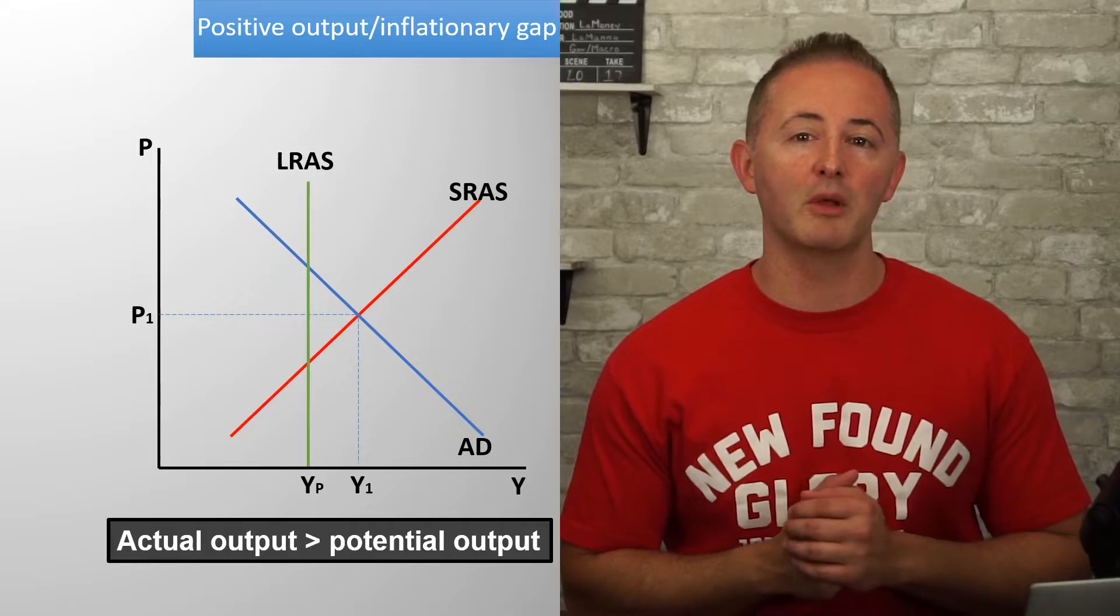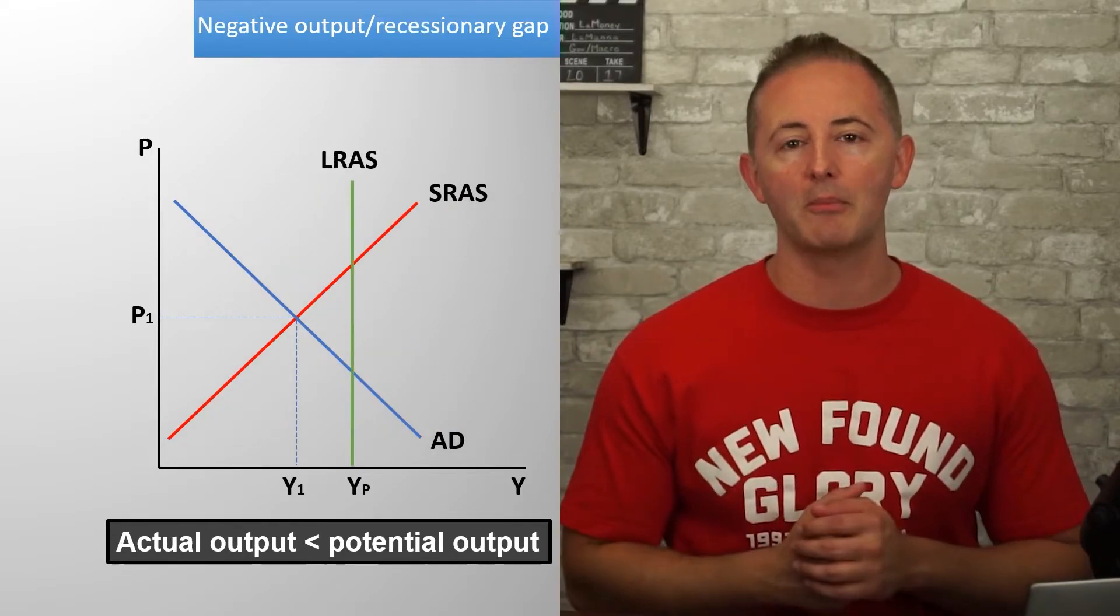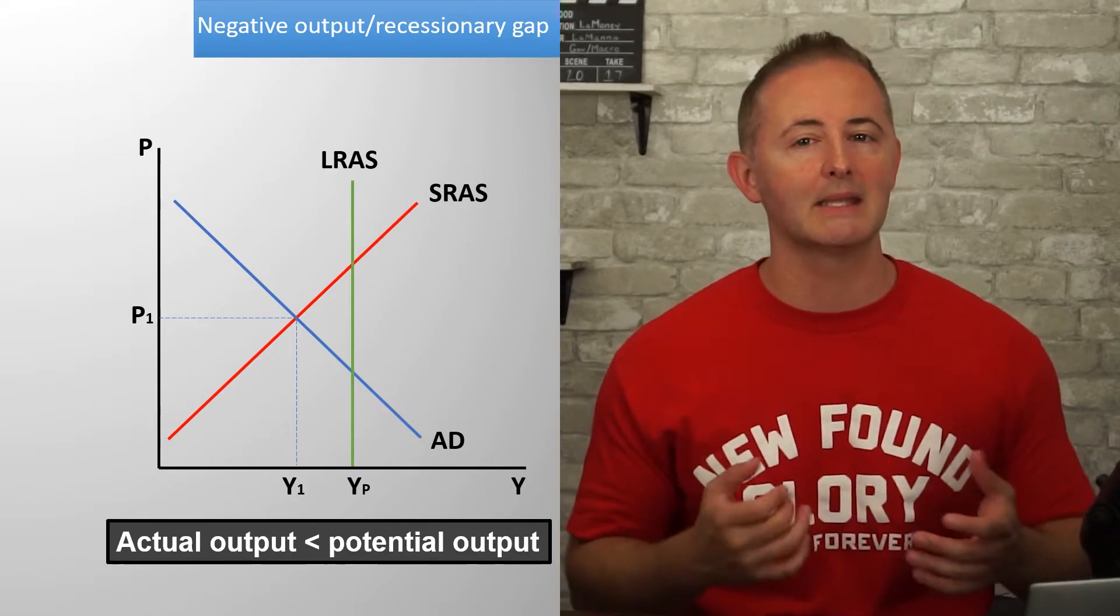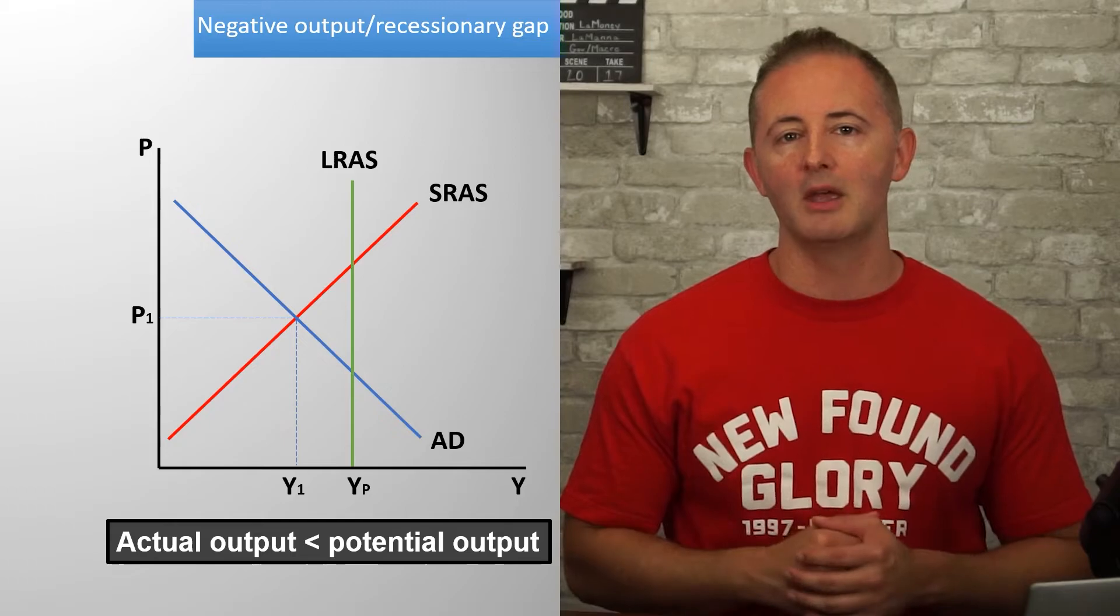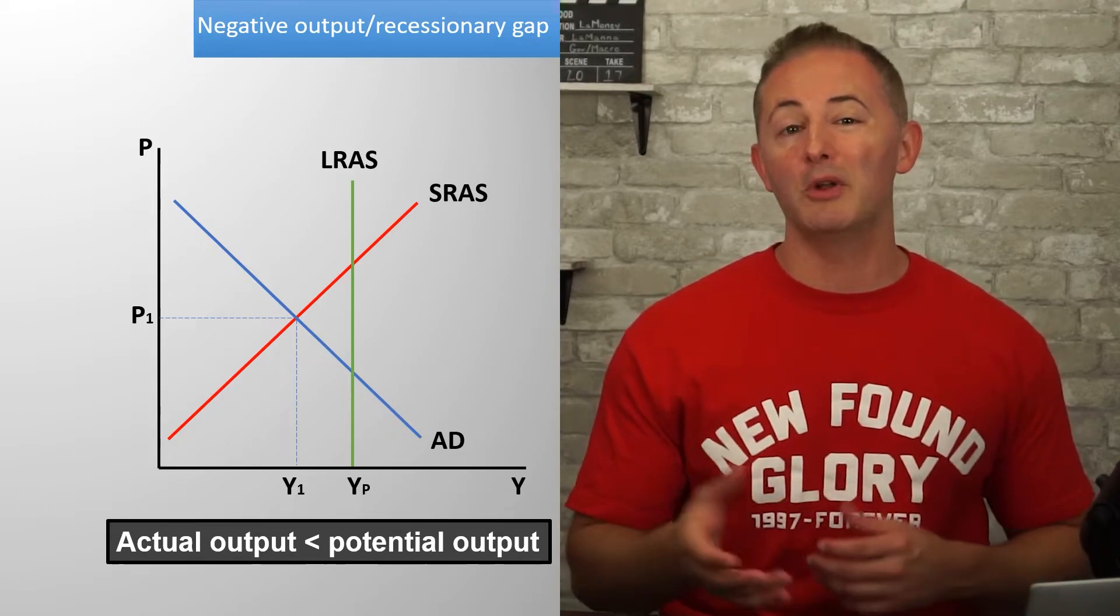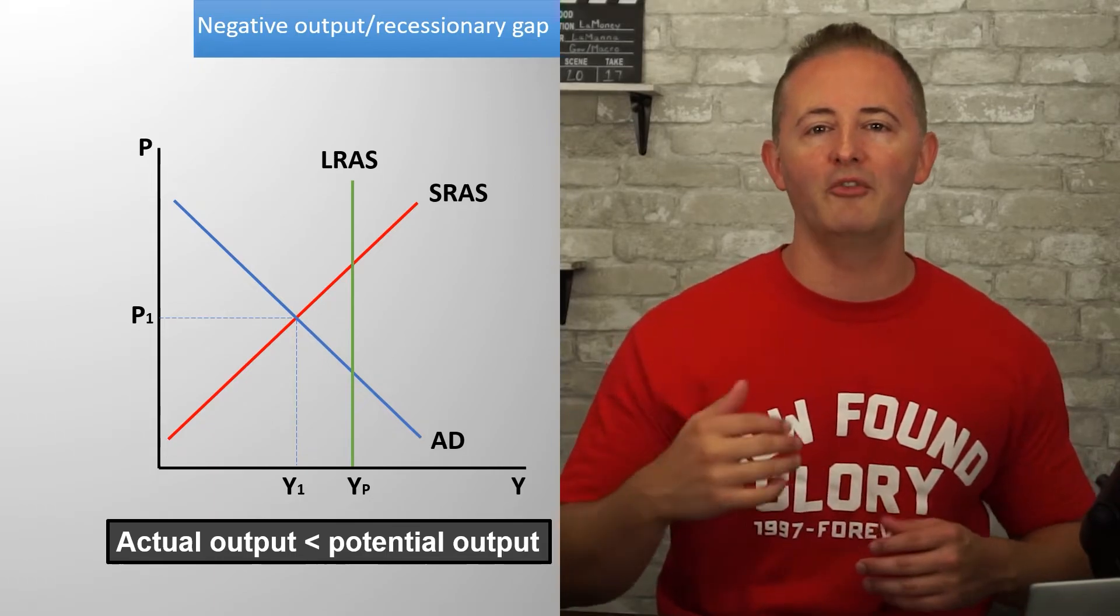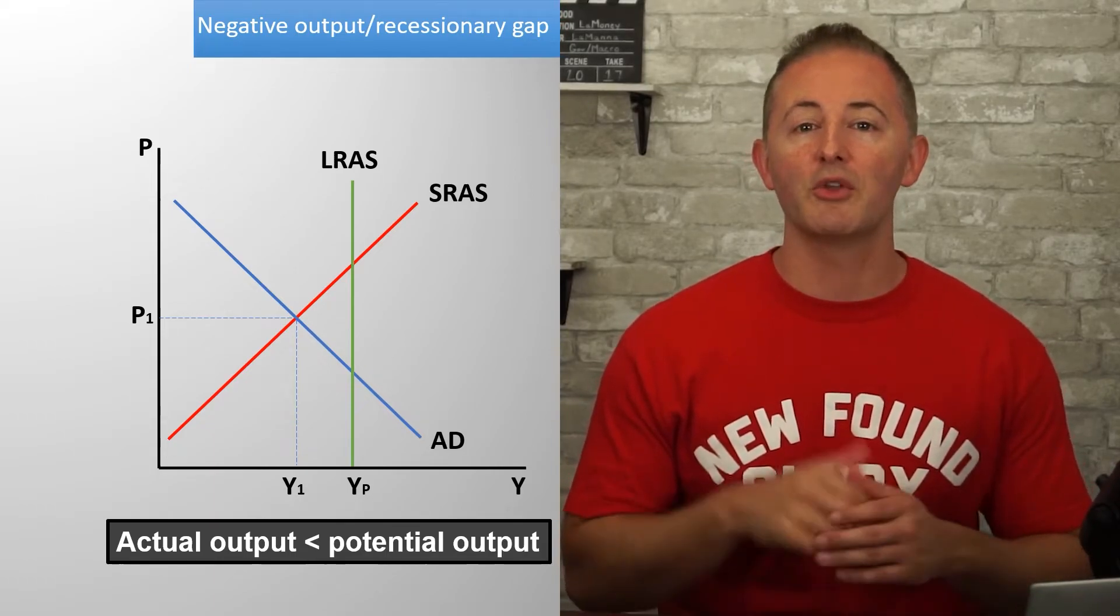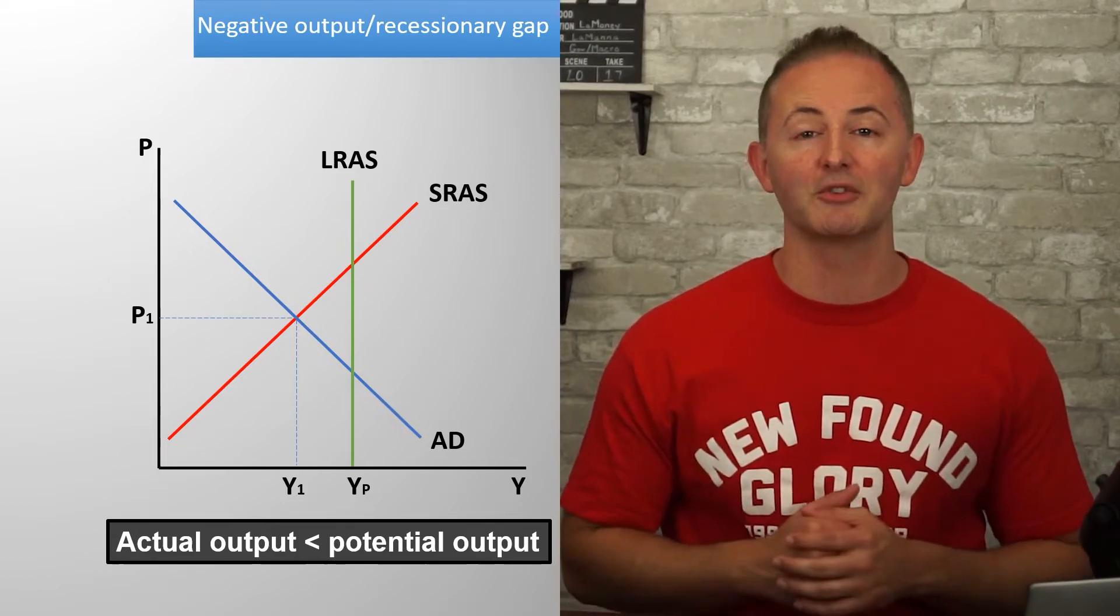And there can also be short-run equilibrium to the left of the LRAS curve. And this is known as a negative output gap where actual output is less than potential output. This is also known as a recessionary gap. And importantly, since output is less than potential output, it means that unemployment is above the natural rate of unemployment. So there is cyclical unemployment because the economy is experiencing a recession.